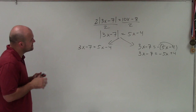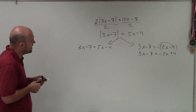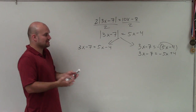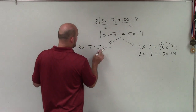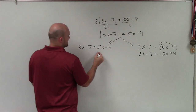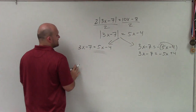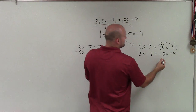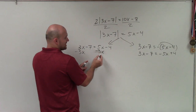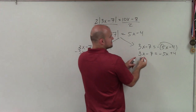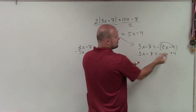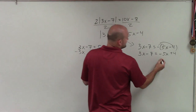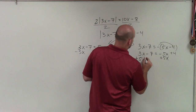Now I need to solve for x. To solve for x, I need to get the variables on the same side. I'm going to choose to get the variables both on the left side. Let's keep them positive — rather than subtracting 3x on both sides, which would make that a negative 8x, I'm going to add 5x on both sides over here.